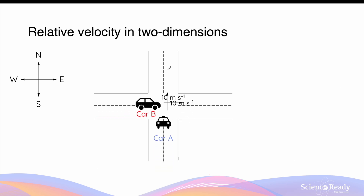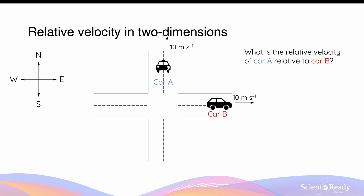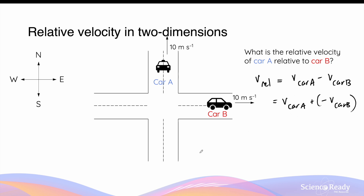Now let's look at the same scenario and calculate the velocity of Car A relative to Car B. This relative velocity is equal to the velocity vector of Car A minus the velocity vector of the observer, which is Car B. This is equivalent to the velocity of Car A plus the negative velocity vector of Car B. The velocity vector of Car A is heading north at 10 meters per second, and the negative velocity vector of Car B is heading towards the west at 10 meters per second.